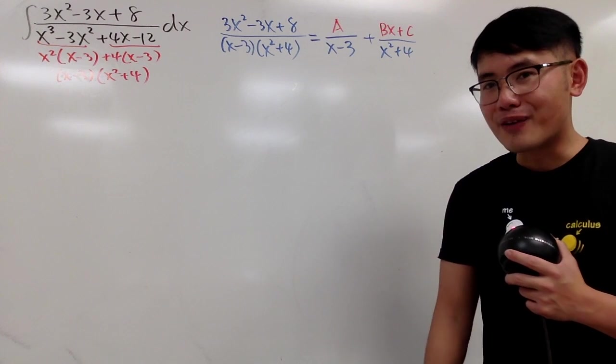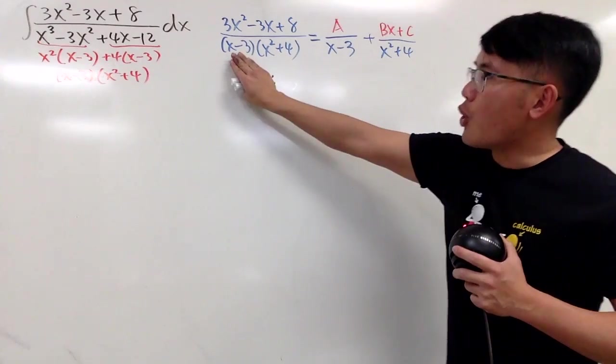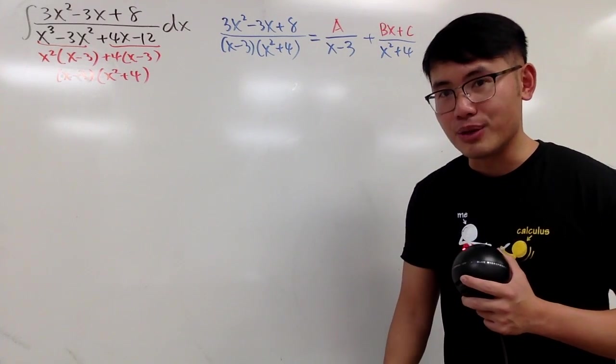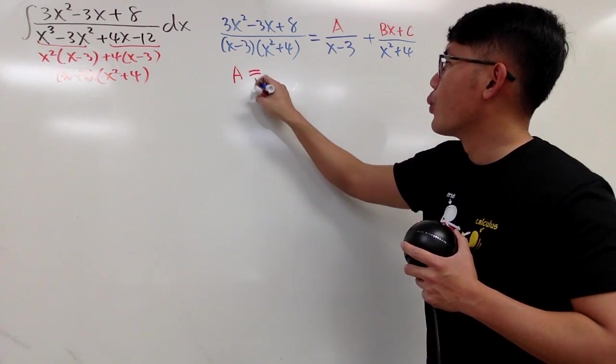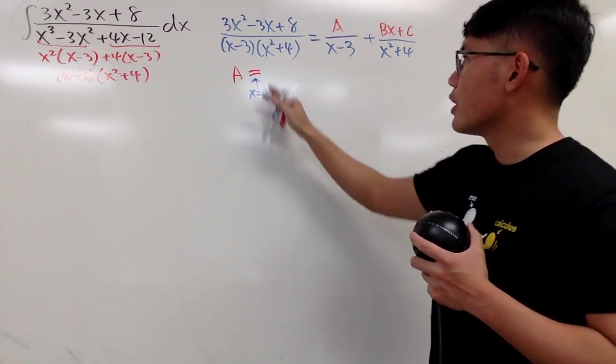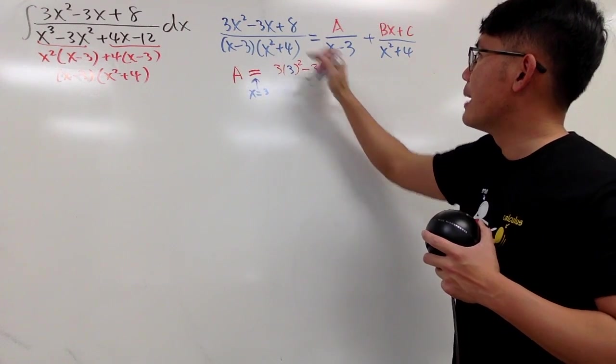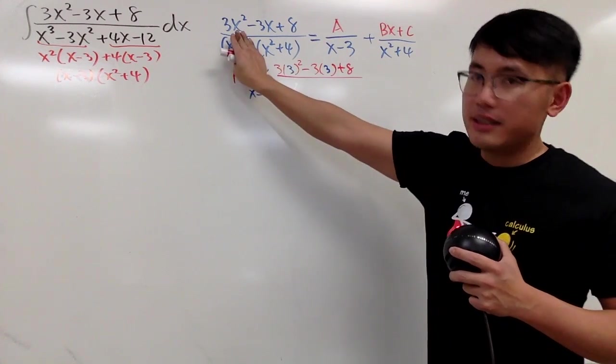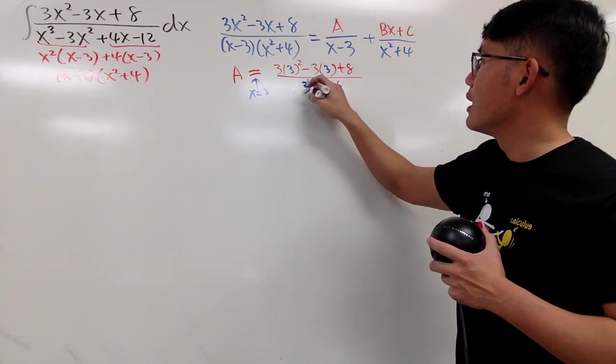And for this one, we can do cover-up to take care of one letter only, namely A. Because I can go here and cover up x minus 3, and then I can make x minus 3 being 0 by plugging 3 into x. So I'll write this down right here for you guys. A is equal to when you plug in 3 into the rest of the x right there. So we end up 3 times 3 squared, and then minus 3 times 3, and then plus 8 all over. This is out already, putting 3 in here. So we get 3 squared plus 4, like this.